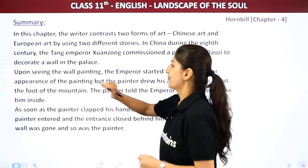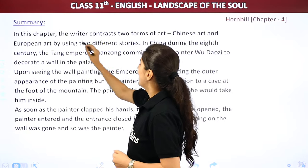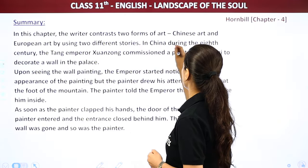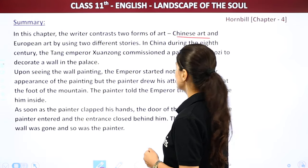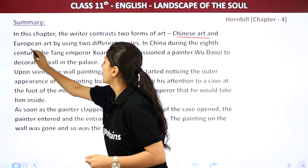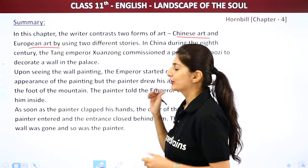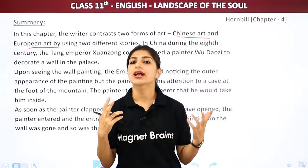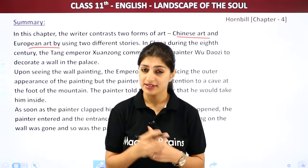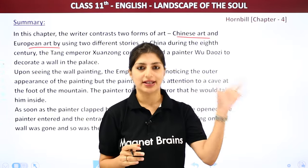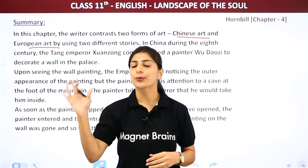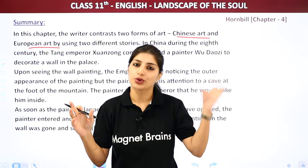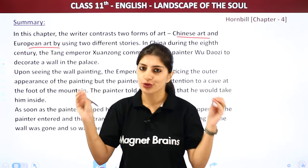Summary. In this chapter, the writer contrasts two forms of art — Chinese art and European art — by using two different stories. So in this chapter, we will understand the two art forms: one is Chinese art and one is European art. And how will we understand the two forms of art? We will learn a story about each.